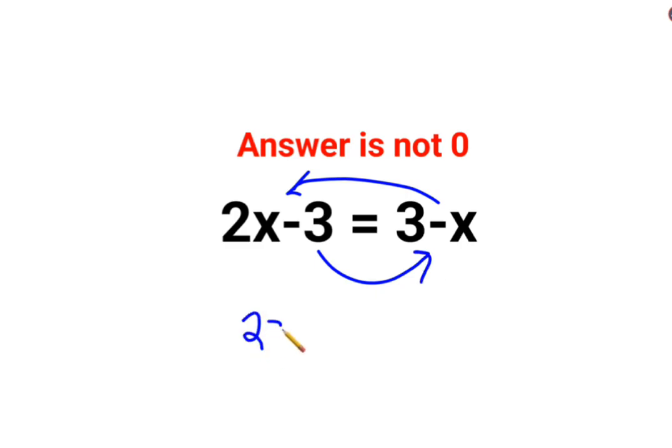So we have 2x minus x, and shifted on the other side of the equal to becomes plus x, equals to 3. Minus 3 when shifted on the other side becomes plus 3. So we have 3x equals to 3 plus 3 which is 6.